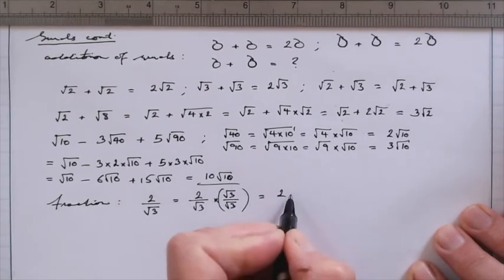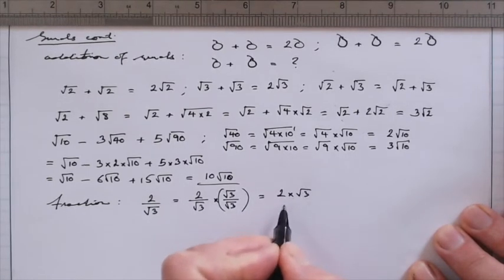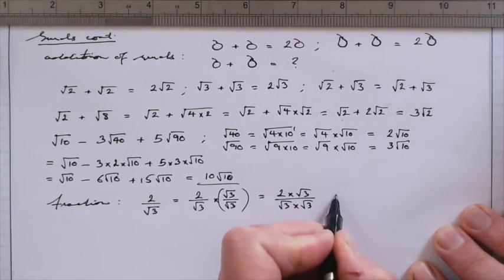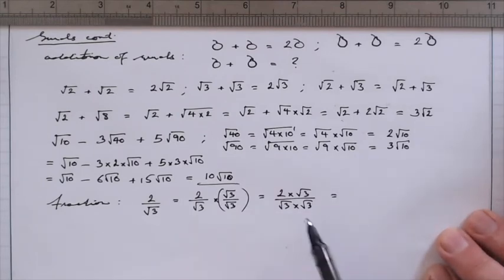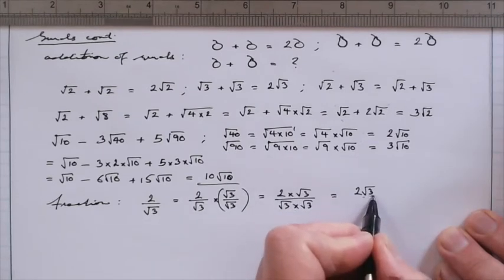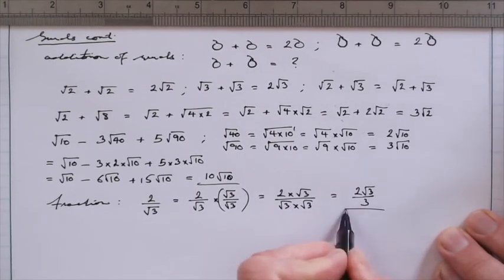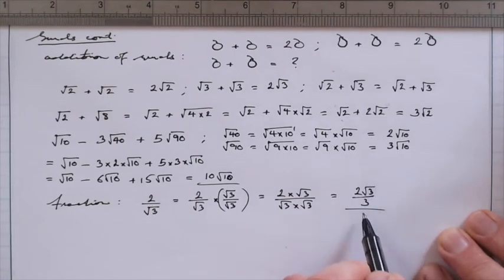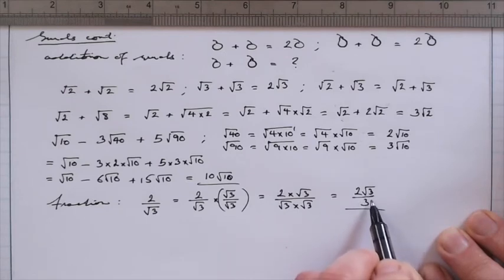So we're going to write 1 as root 3 divided by itself. This is just 1, so we're not changing the value of this fraction. But by writing it in this way, we can now do a fraction multiplication. So on the top, I have 2 times root 3. And on the bottom, I have root 3 times root 3. And you thereby see the point of this exercise that in the denominator now, we have this surd multiplied by itself, which will give us an integer. So we have 2 root 3 divided by 3. And so we've rewritten this fraction where the surd was in the denominator as a fraction where now the denominator is an integer or a rational number.